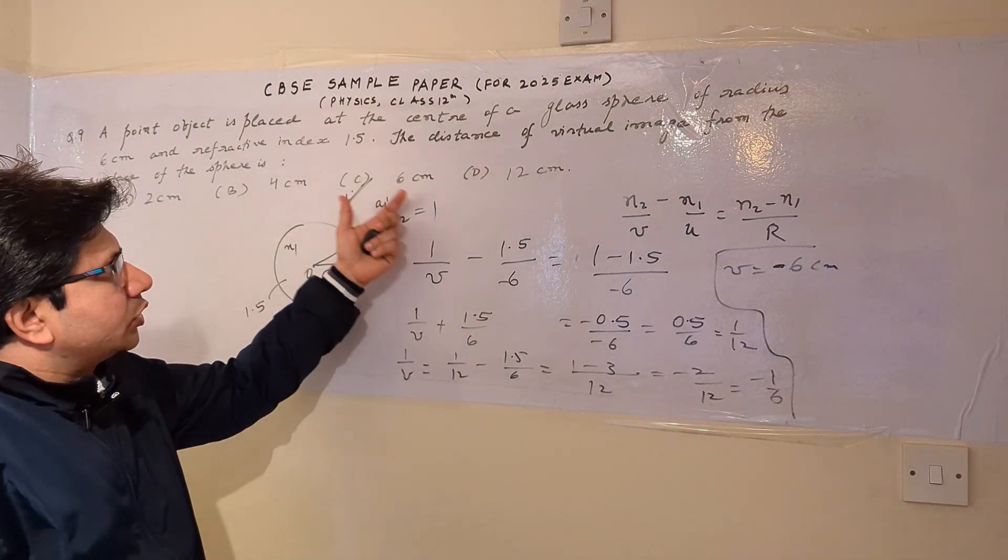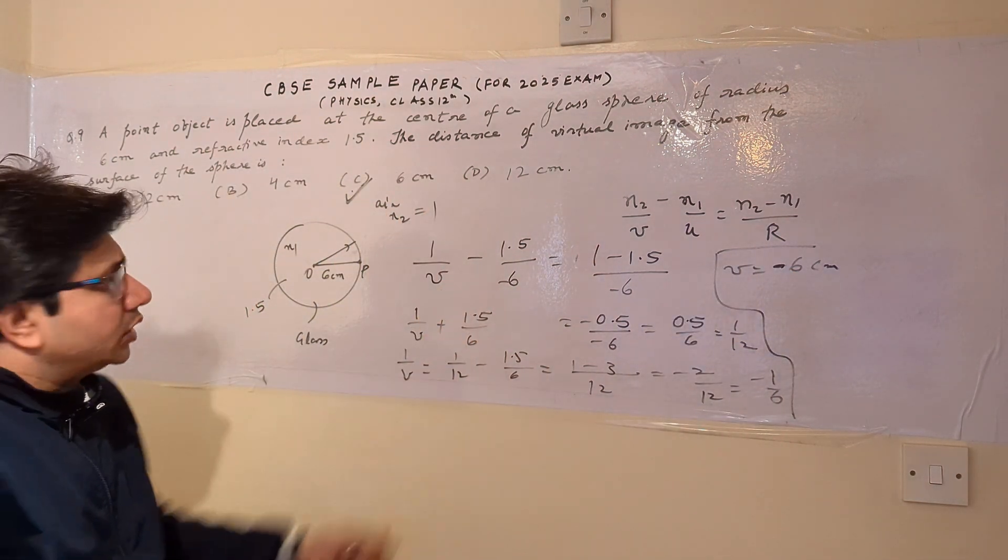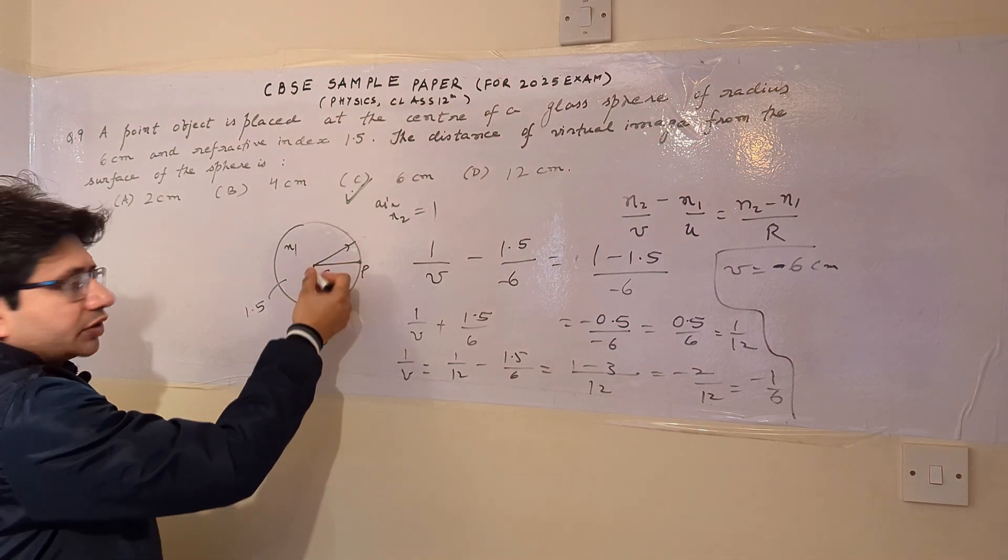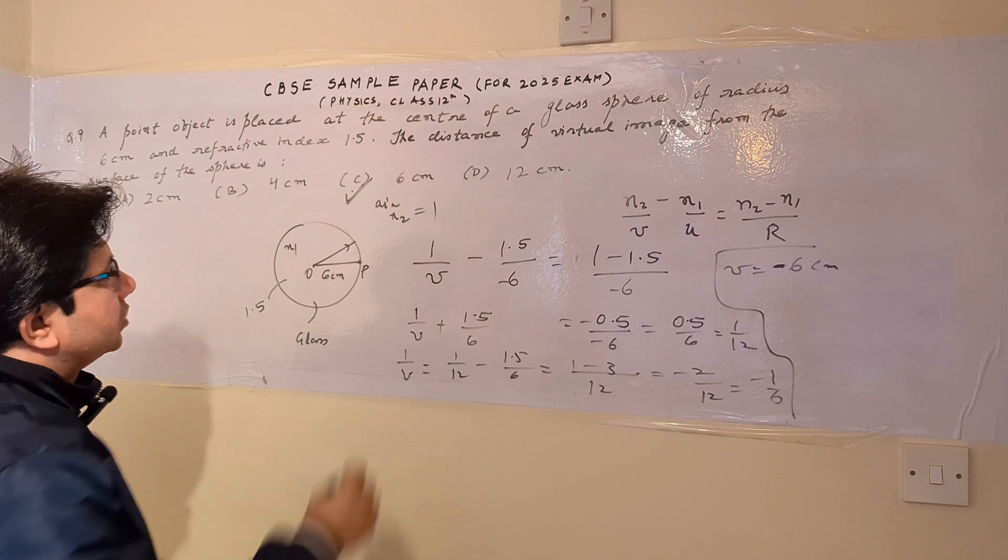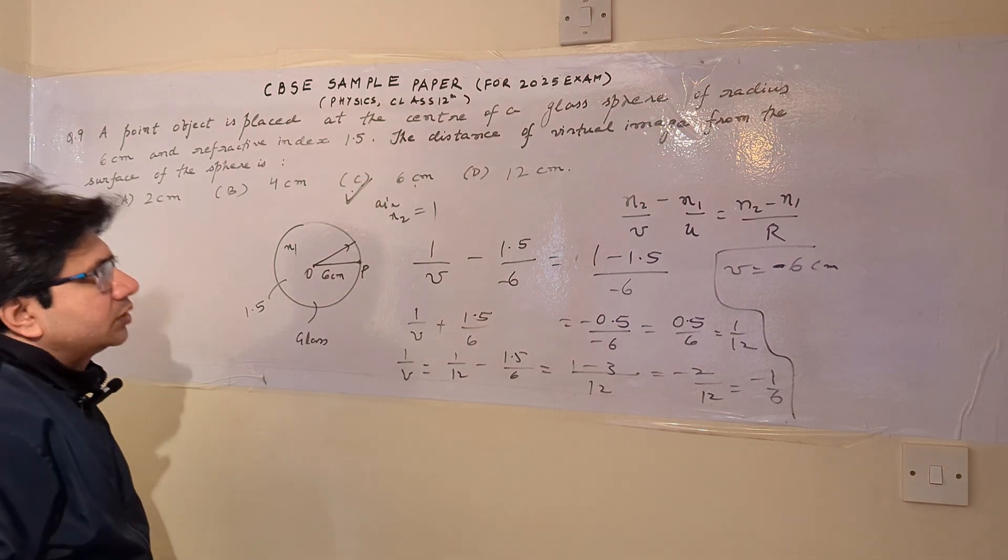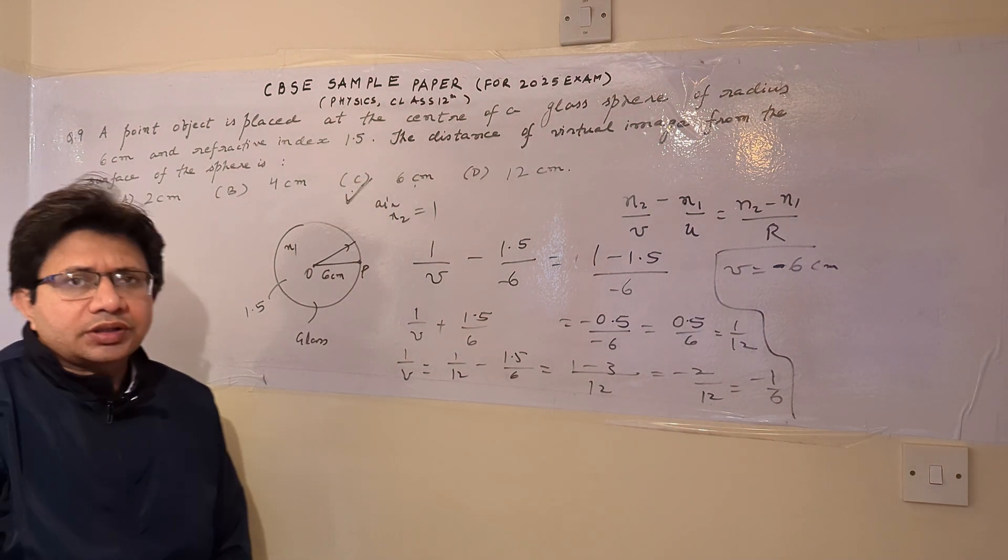The direction is calculated from this negative sign. If the question asks about the direction, then the direction is leftward. We can say that the image is at the center, where the object is placed. So 6 centimeters is the final answer. Hope you understand the solution. Thank you.